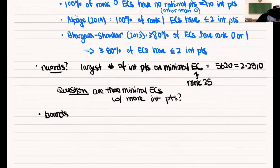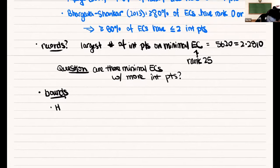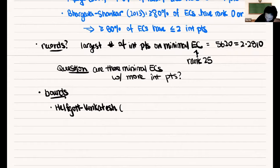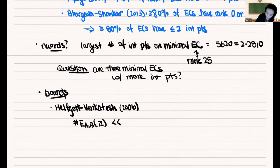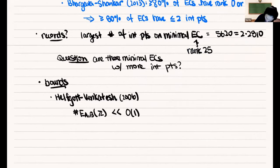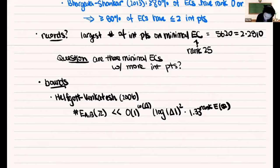You can also ask about bounds for the number of integral points. We know it's a finite number, and over the years people have studied how to bound this number. There is work of Helfgott and Venkatesh in 2006 showing the number of integral points is bounded by O(1)^{ω(Δ)} · (log|Δ|)² · 1.33^{rank}, where ω denotes the number of distinct prime factors of the discriminant.